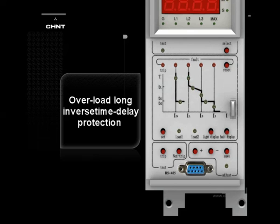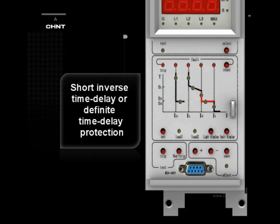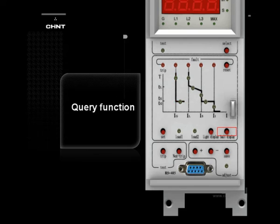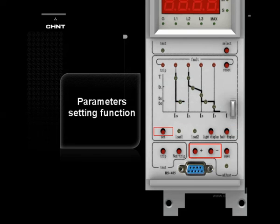Basic functions of the M controller include: overload long inverse time delay protection; short inverse time delay or infinite time delay protection; instantaneous protection; earthing fault protection; query function; parameters setting function; and test function. Selective functions include load monitor function, making current release (MCR), and signal alarm function.